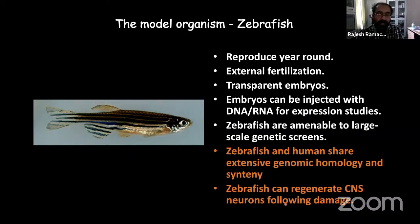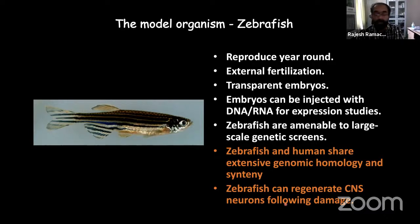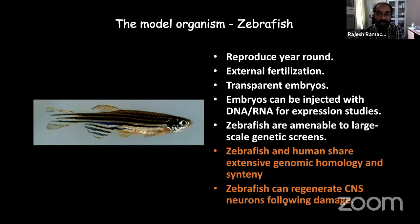Zebrafish can regenerate central nervous system neurons following damage. The central nervous system — brain, spinal cord, and associated organs like the eye — is one of the most complex systems guiding the functioning of the entire organism. Even mammals can regenerate the peripheral nervous system, but that is less significant compared to the CNS from an organismal point of view.